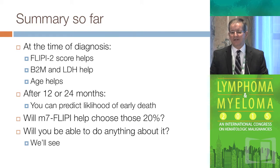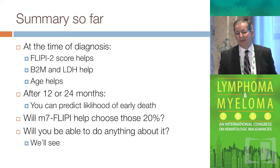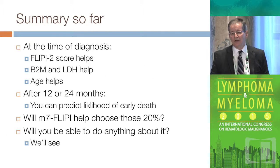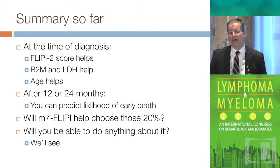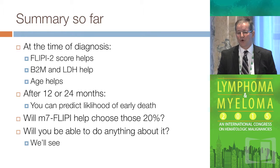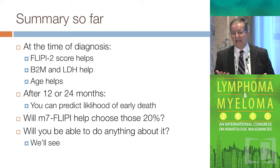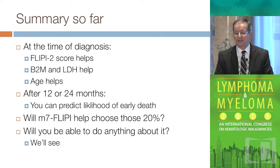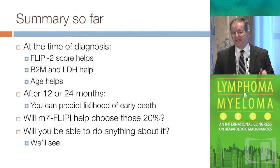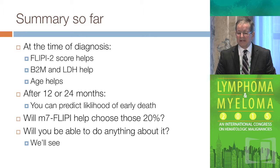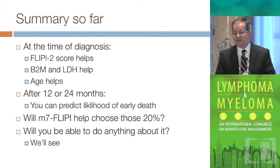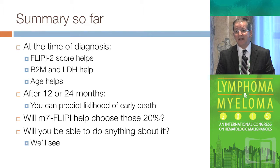So what I've told you is: at the time you see the patient and choose your sequence, you have your FLIPI-2 score, beta-2-microglobulin, and LDH. Age is going to help you — 60 or less than 60. Wait 12 or 24 months and you'll have a better idea of how your patient is going to do. The new M7-FLIPI score Randy described looks like it might help choose that 20%.